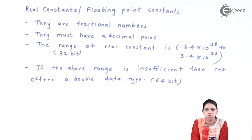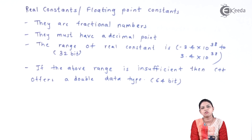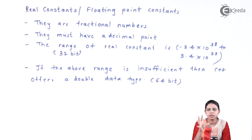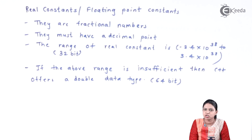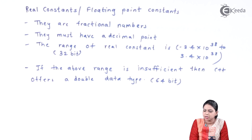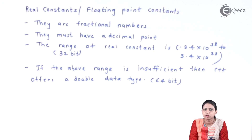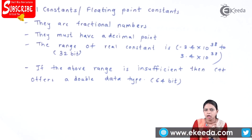Next we have real constant, which can also be called float constant. Real constants are numbers with a decimal point. Whenever in the program we deal with numbers with a decimal point, we make use of real constant, also called floating point constant. They are fractional numbers and must have a decimal point. The range of the real constant is minus 3.4 × 10 raised to 38 to plus 3.4 × 10 raised to 38.